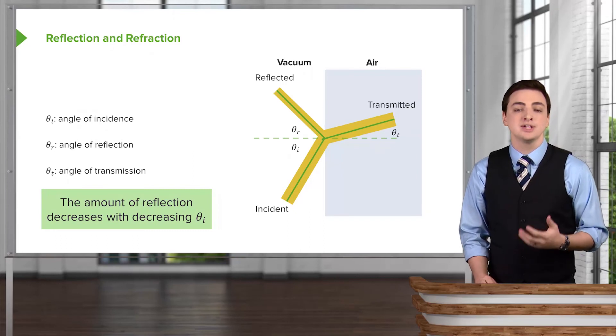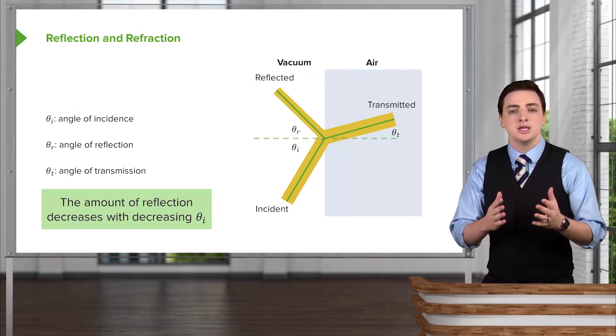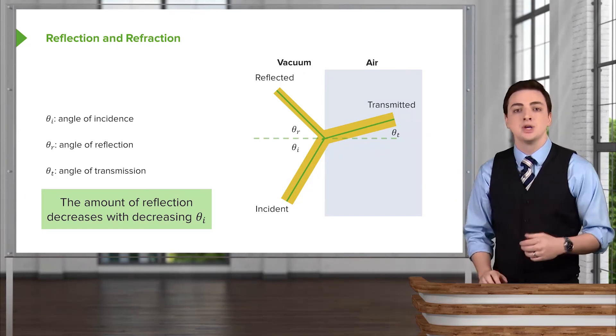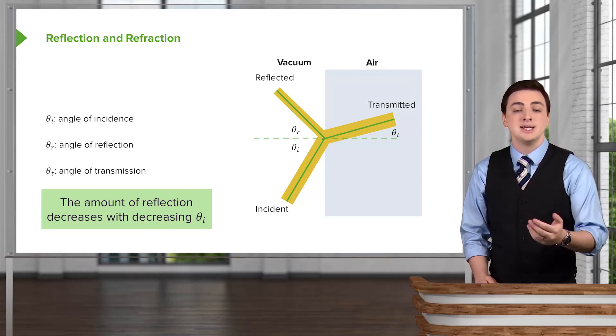The amount of the reflection will decrease as we decrease the incident angle. In other words, when we send light more directly into a new medium, less of that light will be reflected and more will be transmitted into that medium.